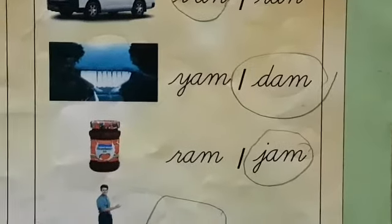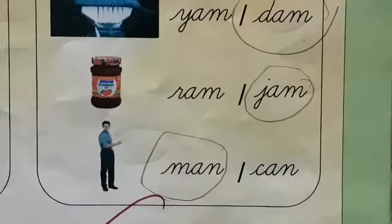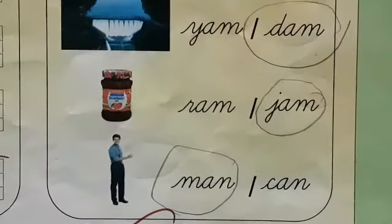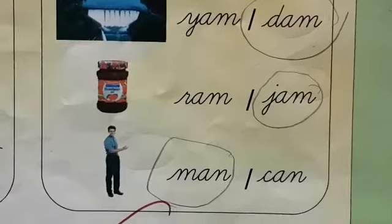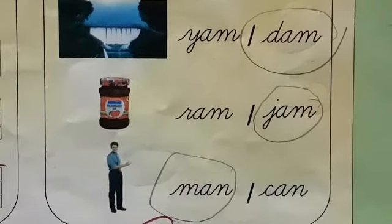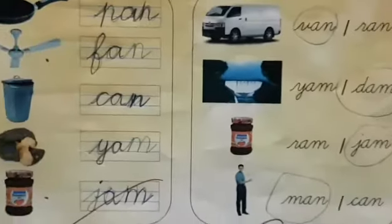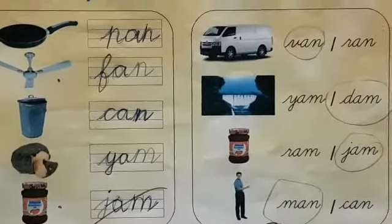J A M, JAM is right. So you have to circle J A M. The last one is MAN. They have given two words: M A N and C A N. MAN is right, so circle the first word M A N. Children, practice those exercises and also copy them in your assignment notebook. Thank you.